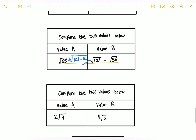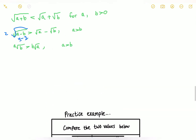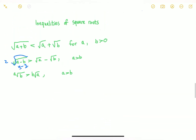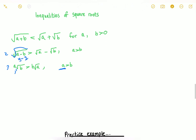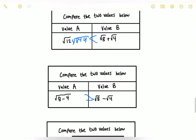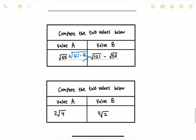Finally, we compare value A as 2 times radical of 4 versus value B as 4 times radical of 2. According to rule number 3, when A is the larger number outside the radical it makes the whole value greater. Here, 4 is outside in value B and 4 is greater than 2, so value B is the greater value.